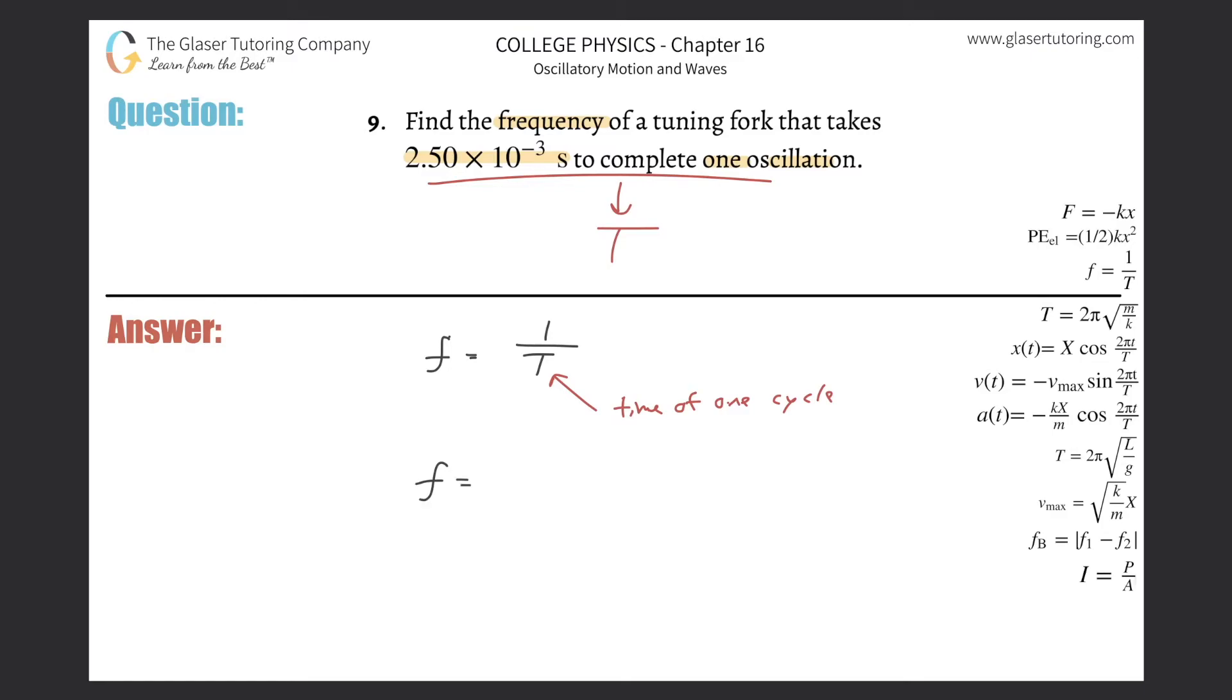So the frequency then would be equal to 1 divided by 2.5 times 10 to the minus 3. That unit is in seconds there. So the frequency has a value of 1 divided by 2.5 times 10 to the minus 3.